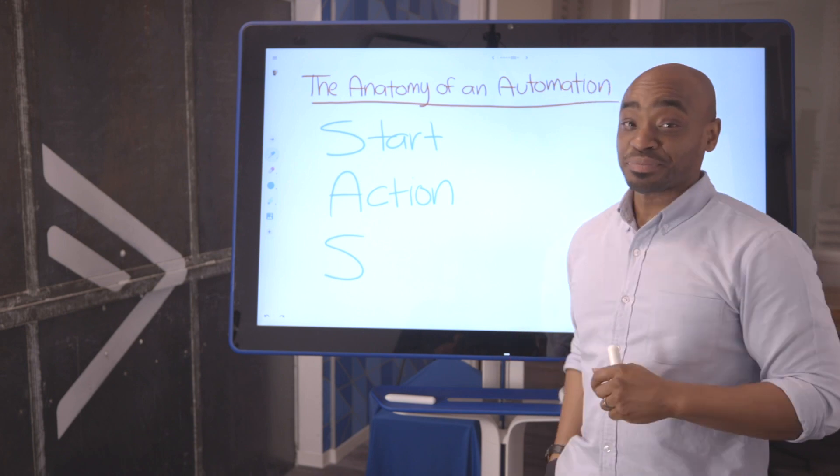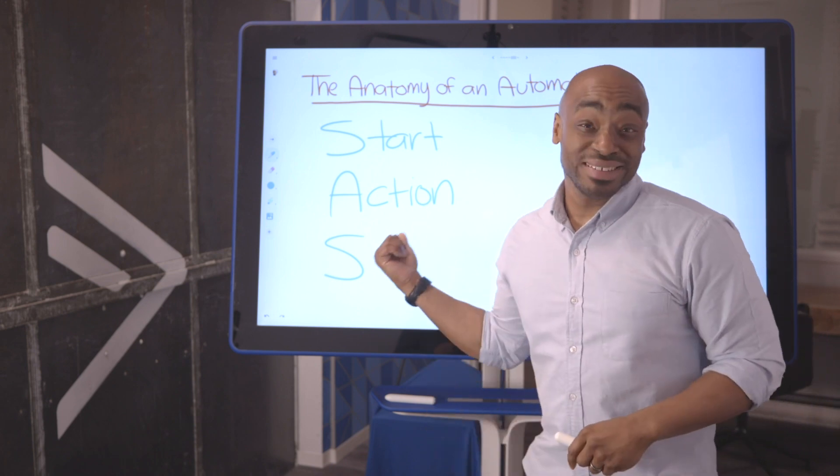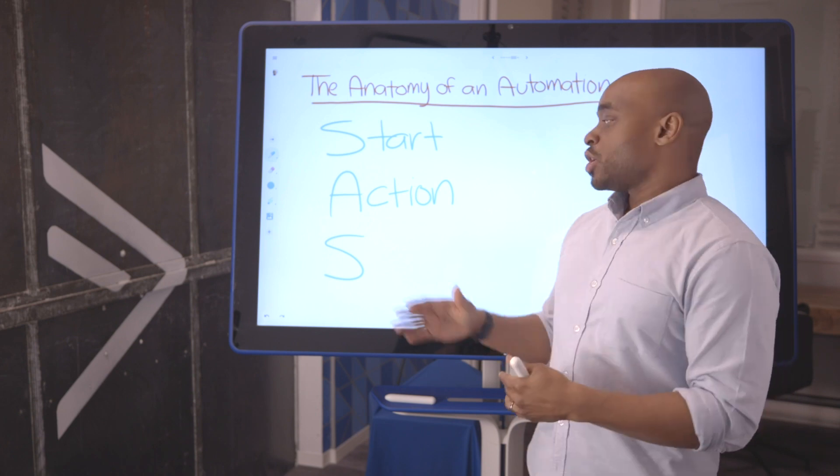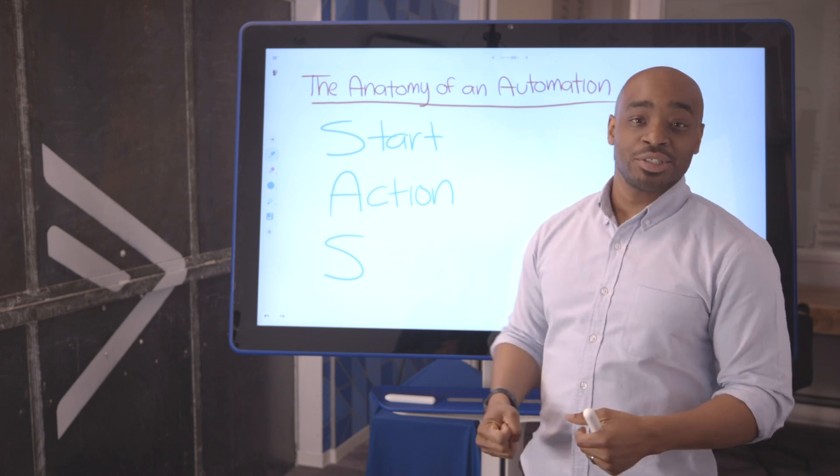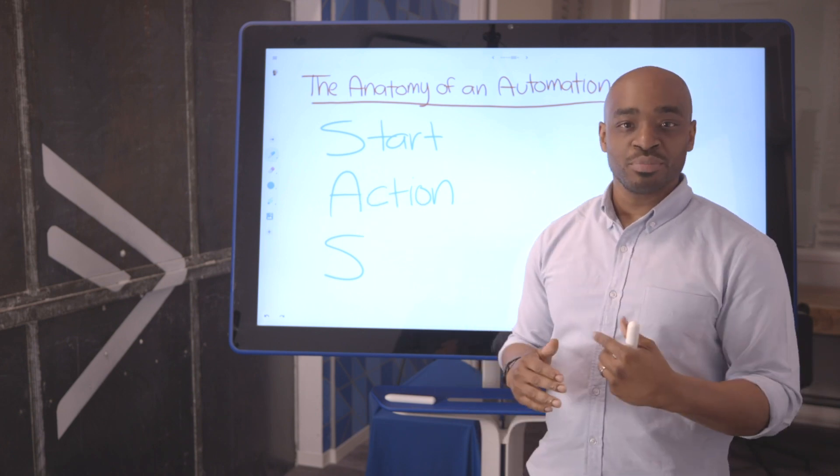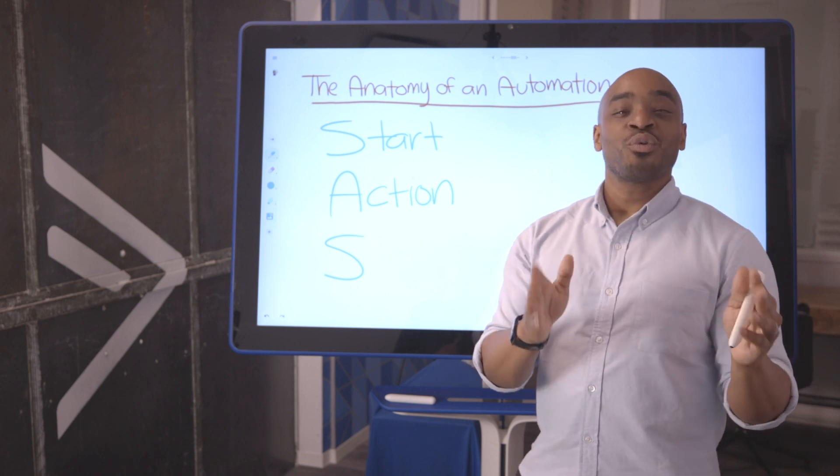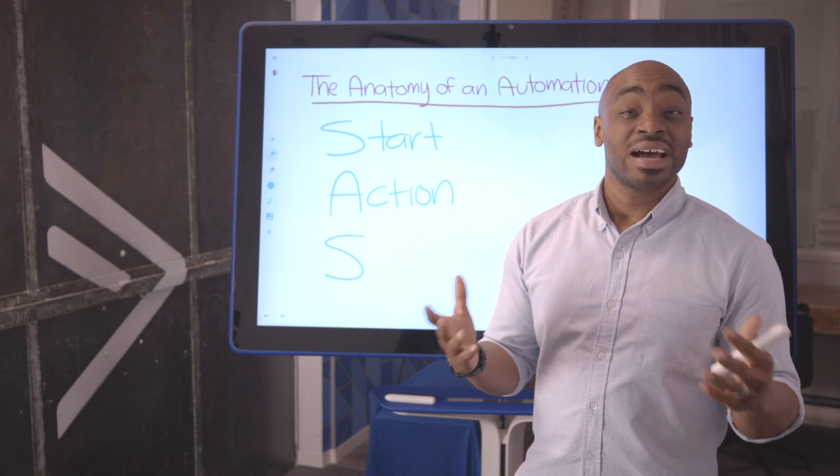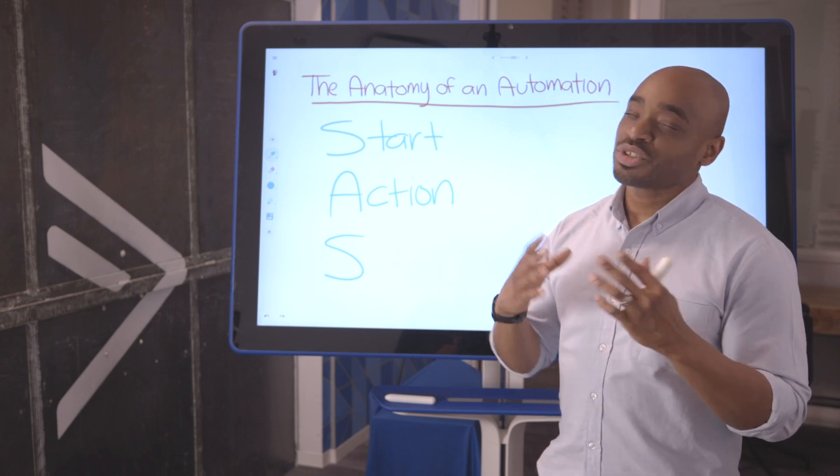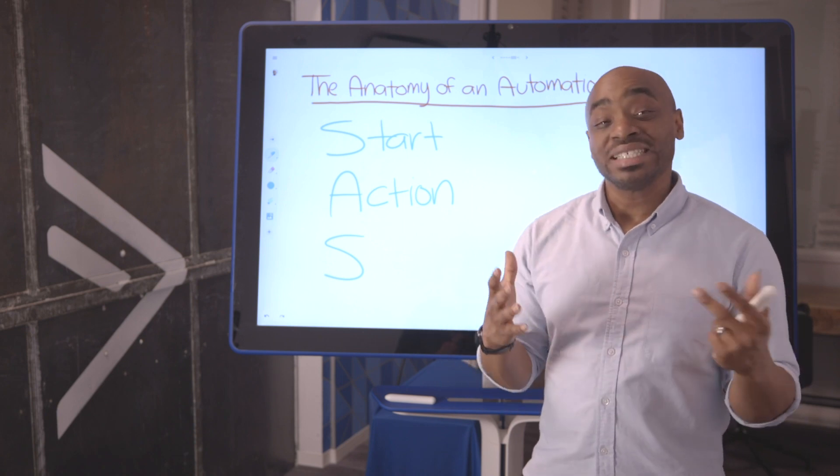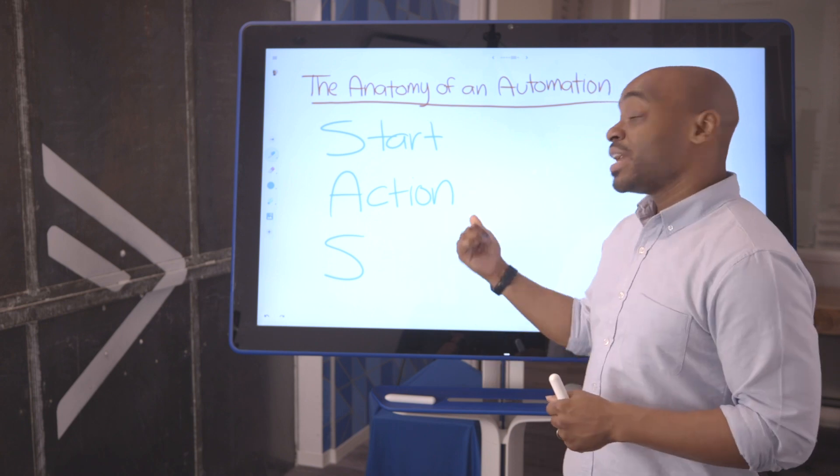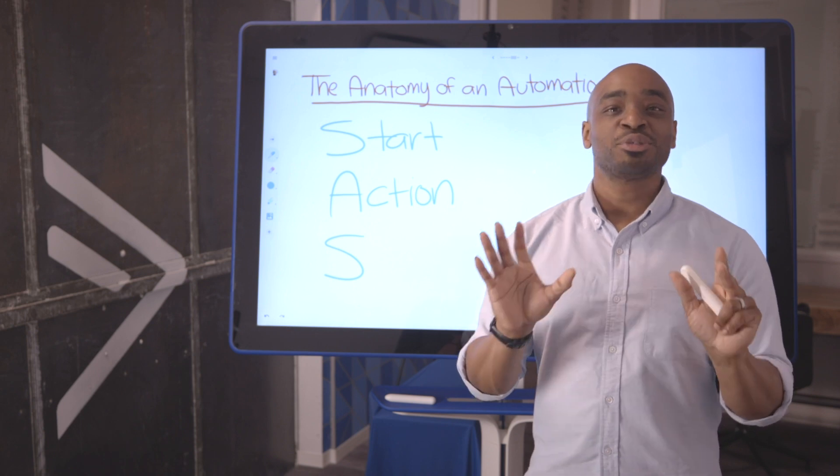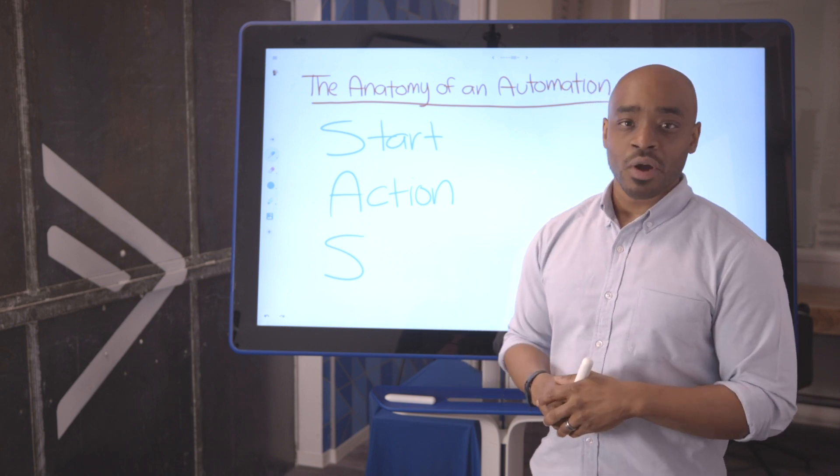A is for action. This is where the magic happens. Once the contact enters into the automation, you have unlimited actions that you can place in the automation builder to execute for that specific contact. This is where you personalize the contacts journey. There are so many actions and so many settings and features in our automation builder that you can truly make this specific to each contact.